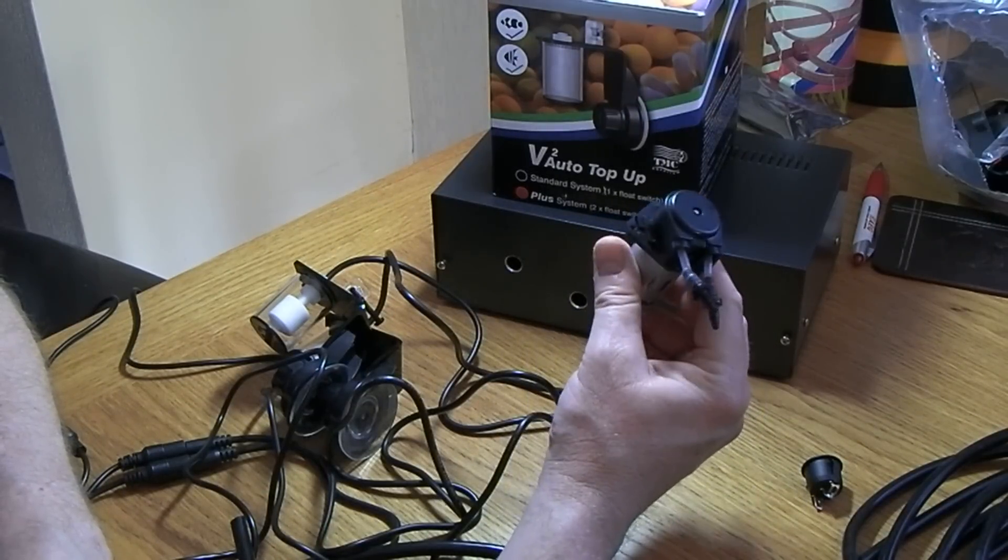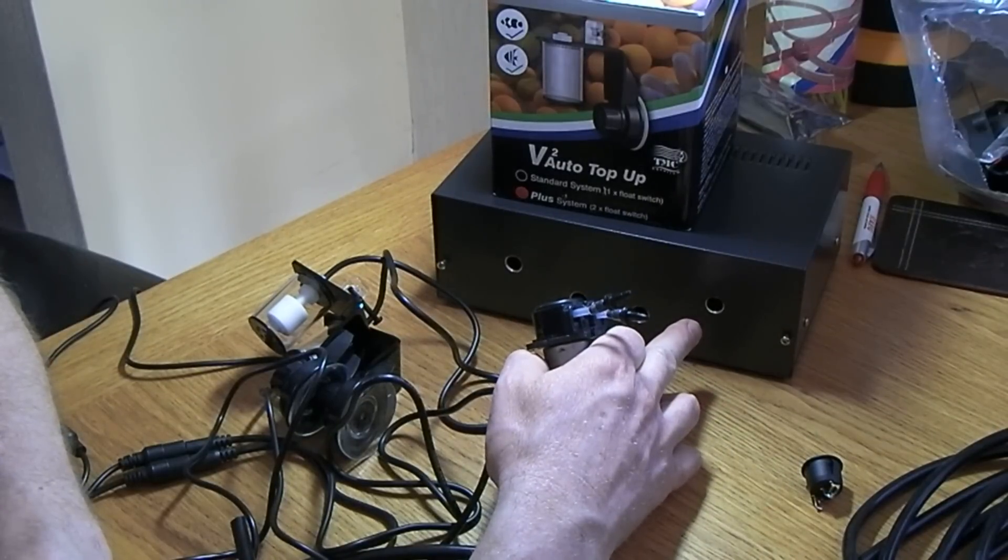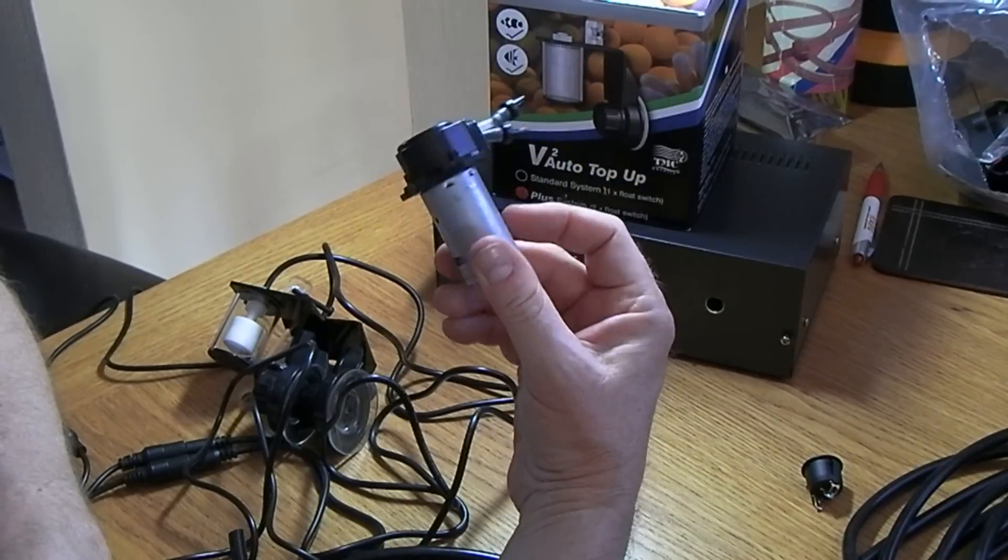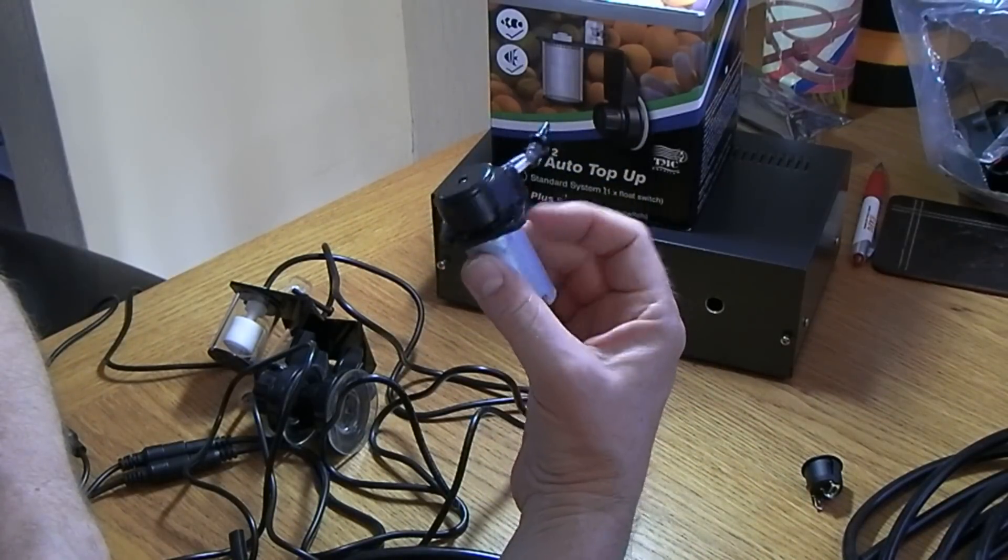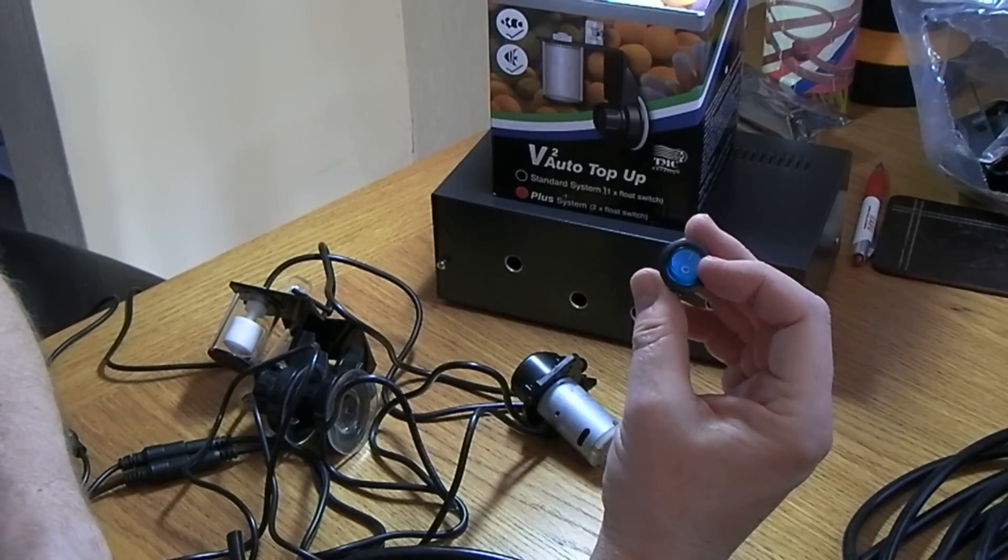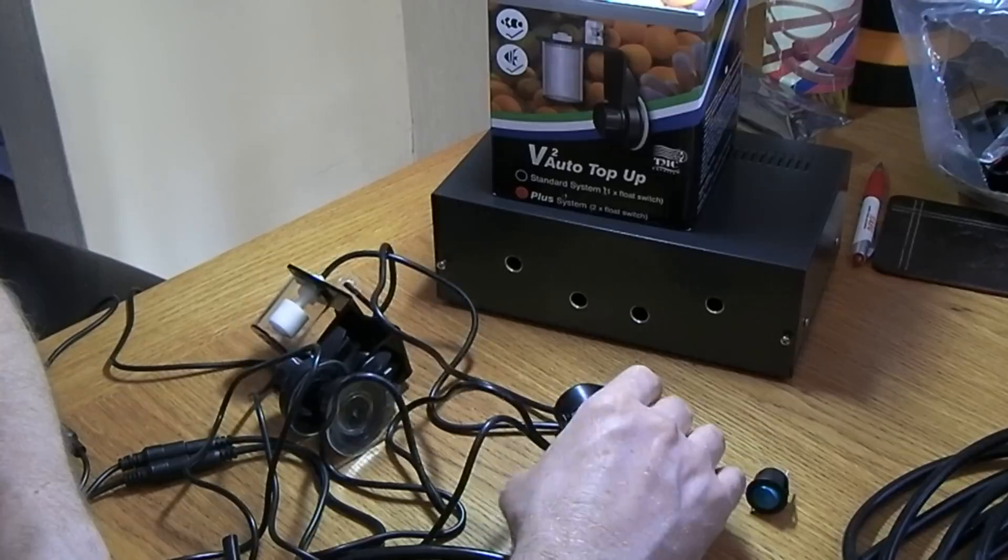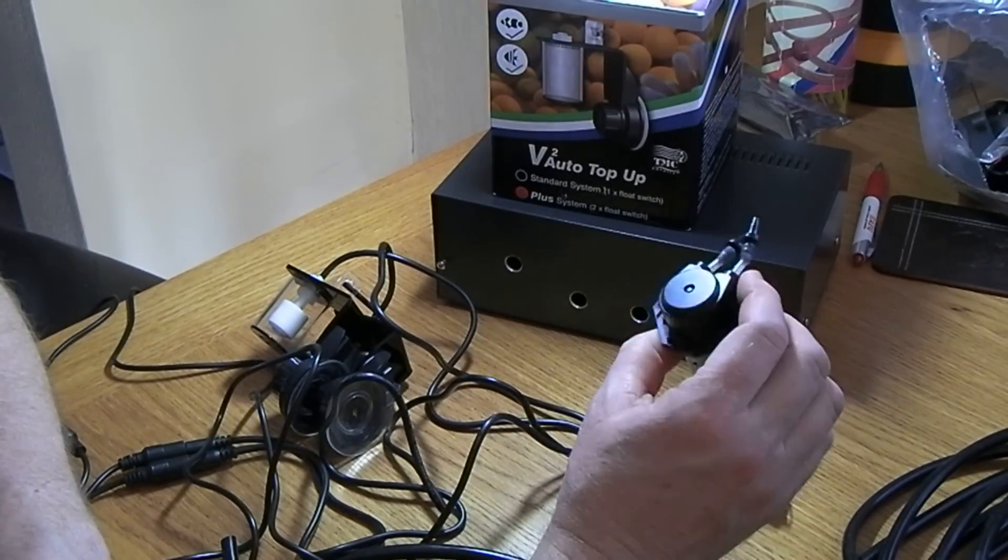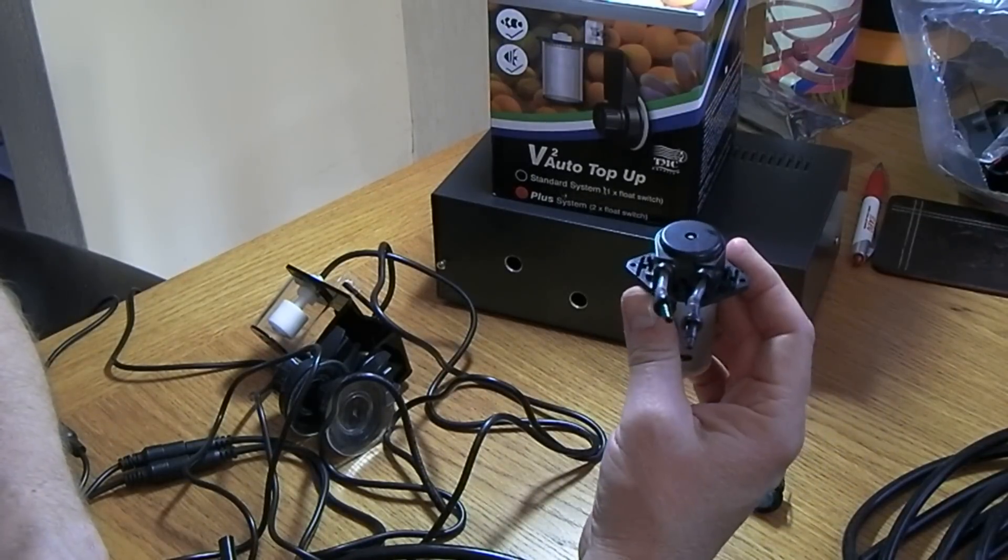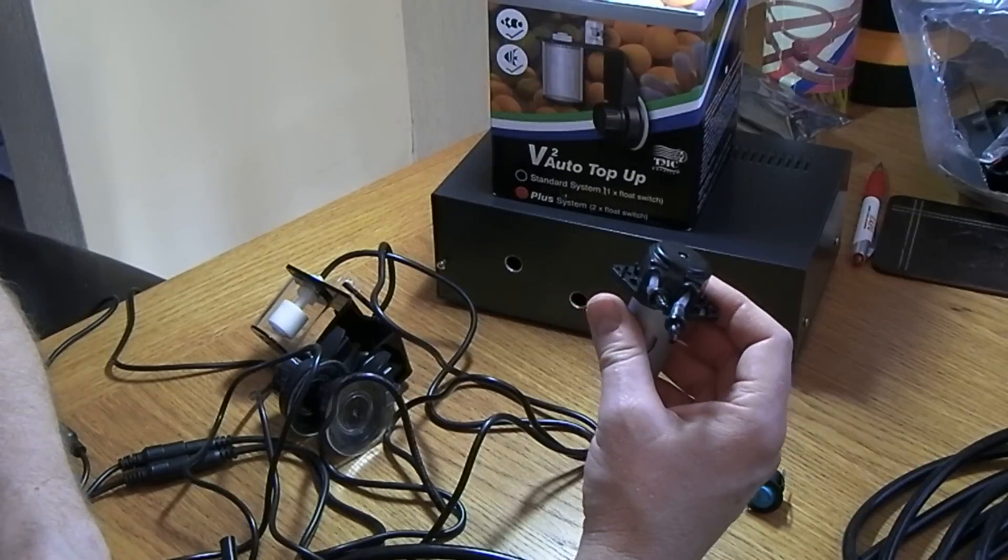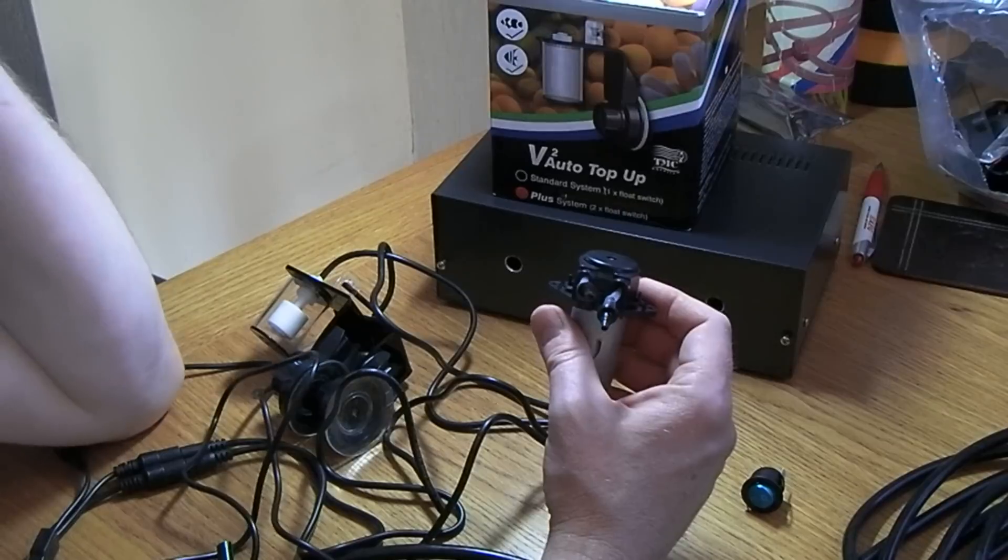I've had to order some hole drills for metal. The peristaltic pump requires a 27 millimeter hole and the switches are 19 millimeter. I'll quickly drill those out and wire this up. This one will require a 12 volt power supply, an external one, and that will just run off a timer.